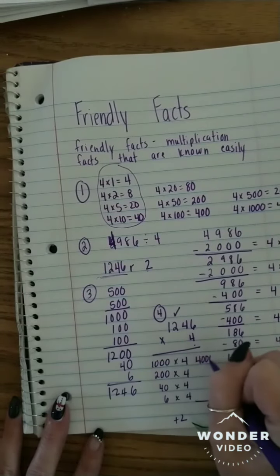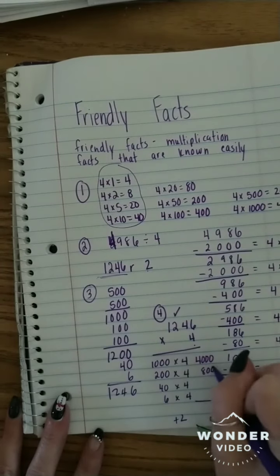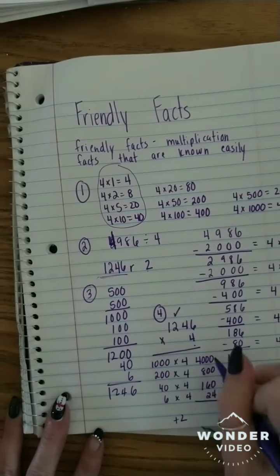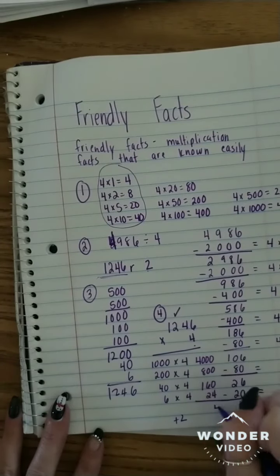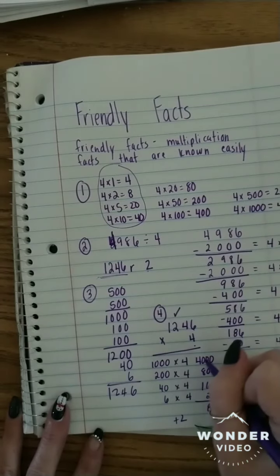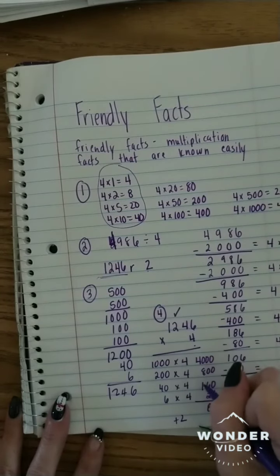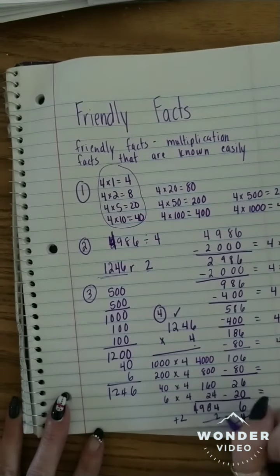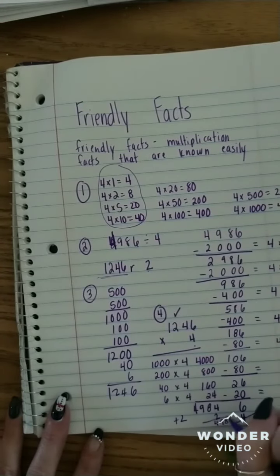So this is 4000, this is 800, this is 160, this is 24. So that's 0, 0, 0 and 4. 0, 0, 6 and 2, that's 8. 0, 8 and 1, that's 9. And that's 4. And we add 2. So it should be 4,986.